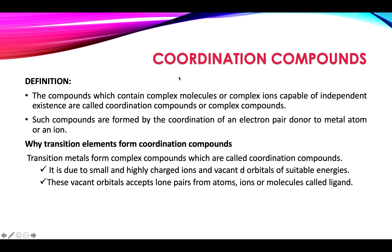The question arises: why do transition elements have the tendency to form coordination compounds? Transition metals form complex compounds called coordination compounds, and the reason is due to their small and highly charged ions and vacant d-orbitals of suitable energies. These vacant orbitals accept lone pairs from atoms, ions, and molecules called ligands. So these two conditions — the transition metal being small and highly charged, and having vacant orbitals that can accept electron pairs from ligands — must be fulfilled.